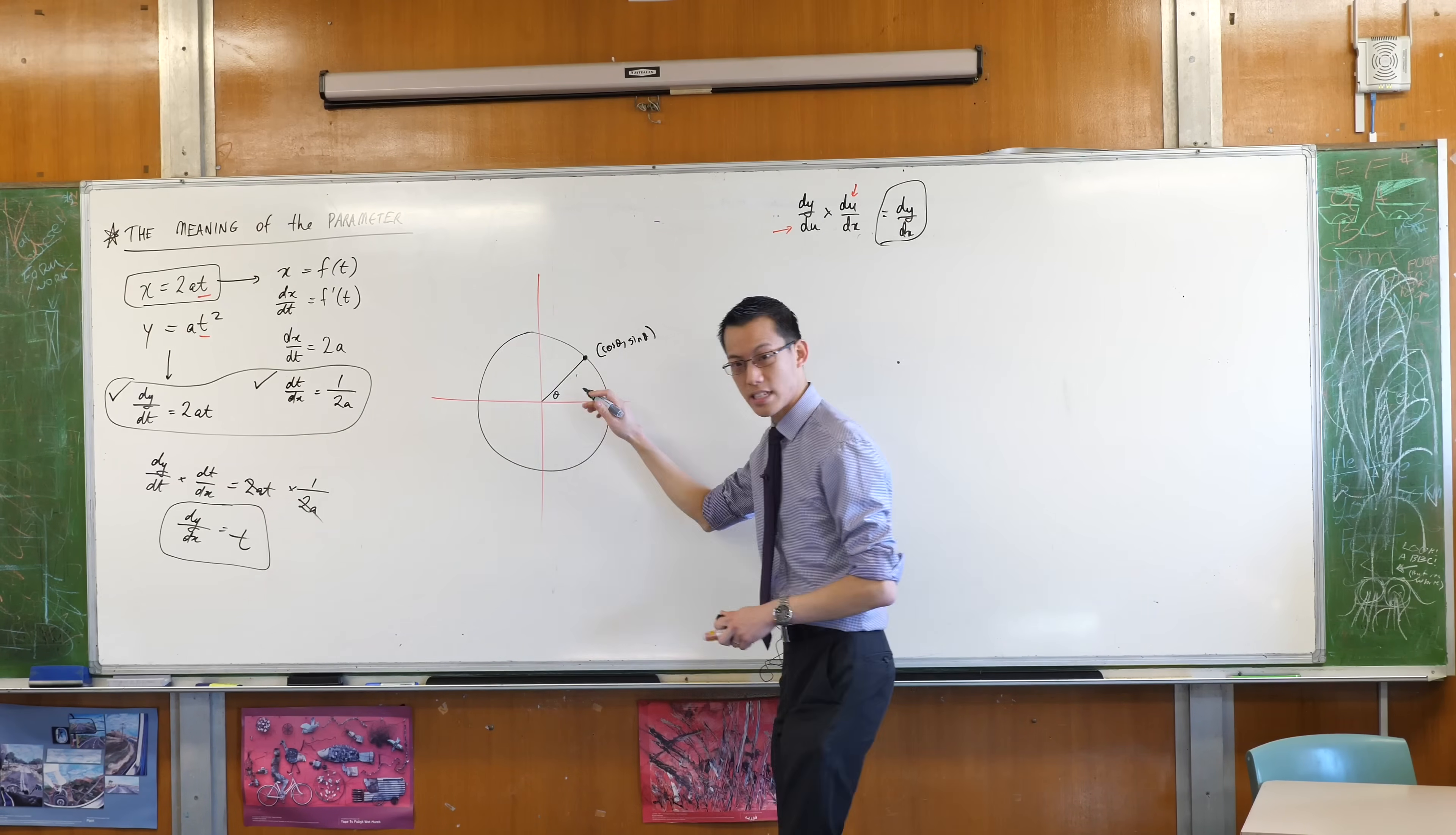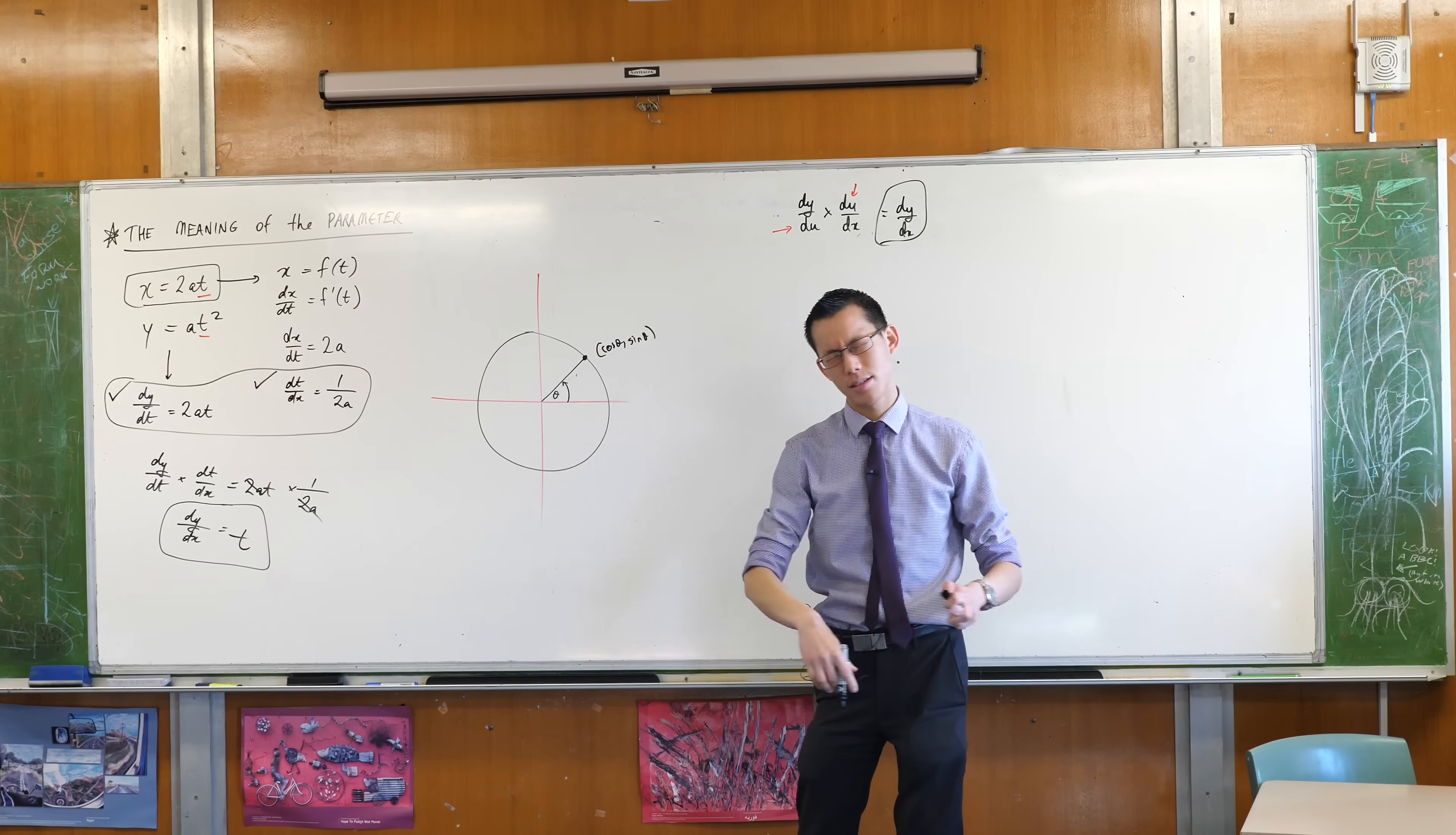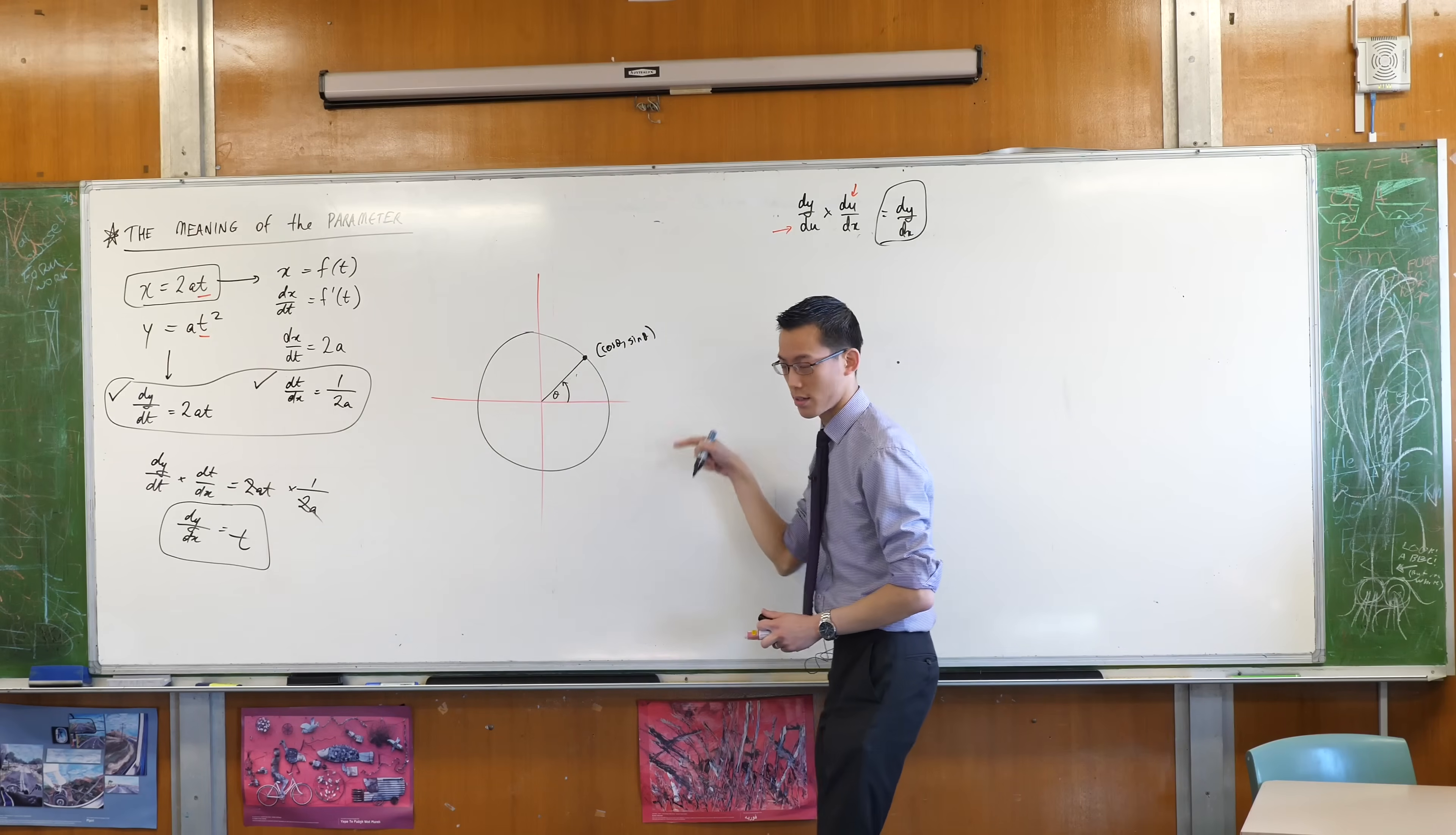This θ that they're talking about starts with a positive x-axis, and it goes up to the radius that connects to your point on the circumference. So that's the θ, that's cos θ, sin θ.